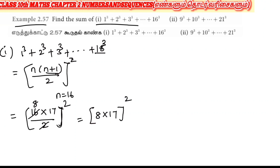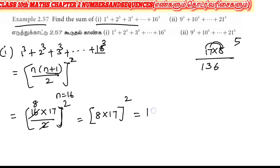Now, 8 into 17: 17 into 8 — 7 eights are 56, carry 5; 1 eight is 8, plus 5 is 13. So 8 into 17 equals 136, to the whole square.